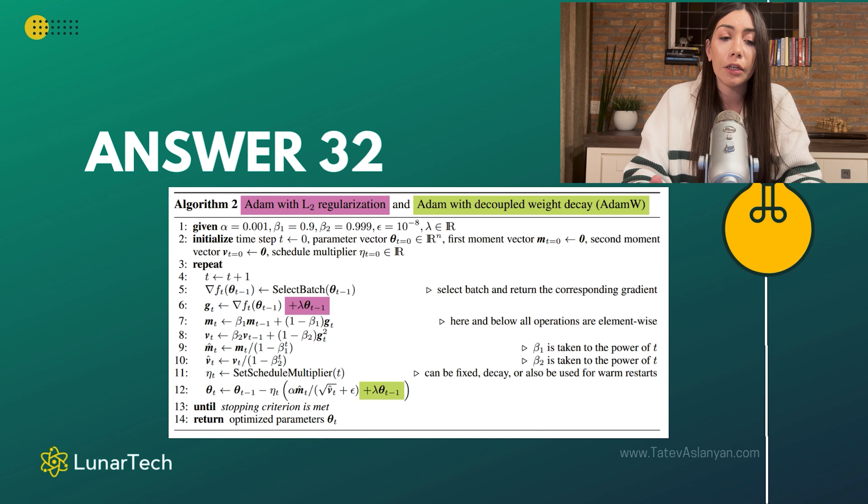And this also means that the algorithm will perform equally well on unseen data, unlike when we are using the traditional Adam, which in some scenarios doesn't perform generalization very well and it suffers from overfitting.